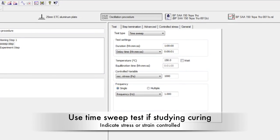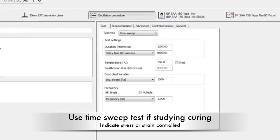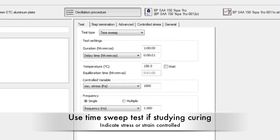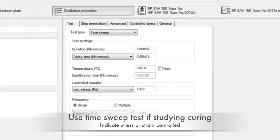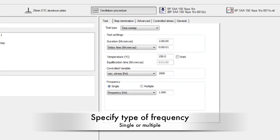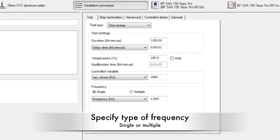If you are studying how the viscosity varies as the sample cures, add a time sweep step. Under the test tab, add the type, duration, and initial temperature. Indicate either stress or strain controlled in the control variable. Also set the frequency as frequency or angular frequency. Specify single or multiple.